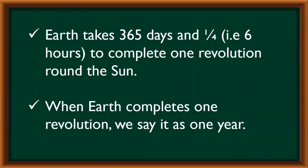Earth takes 365 and 1/4 days, that is 6 extra hours, to complete one revolution around the sun. When earth completes one revolution, we say it as one year.